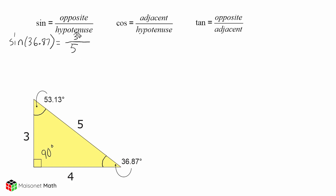So if we were to take 3 fifths and express that as a decimal, that would be equal to 0.6.